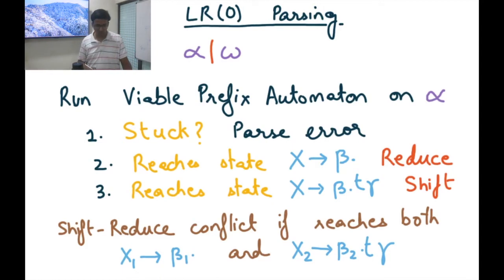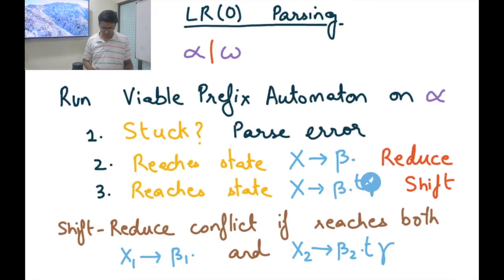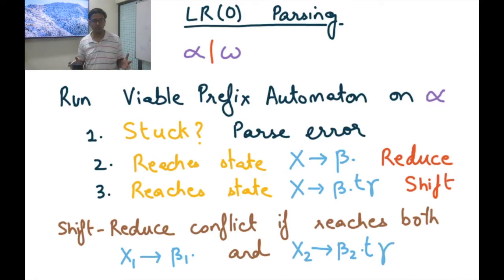So the LR0 algorithm is: at every point, run the entire stack from bottom to top on the automaton. If we get stuck, it's a parse error. If we reach a state X→β•, we reduce. If we reach a state X→β•Tγ, we shift. If there are multiple options, it's a conflict.